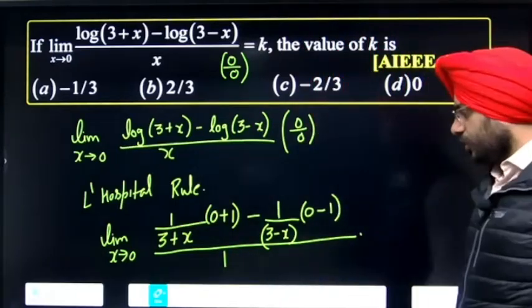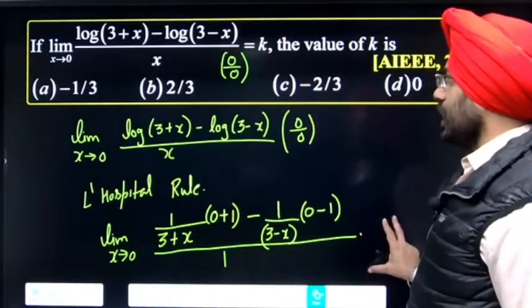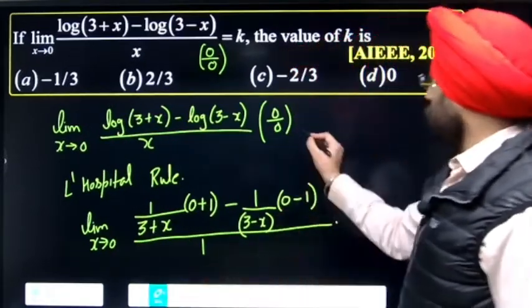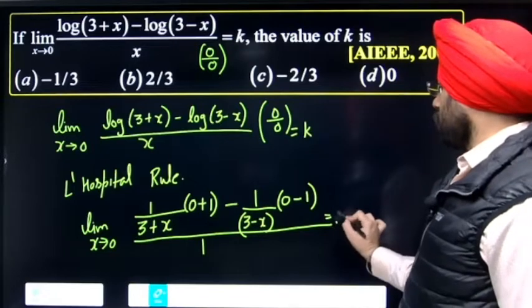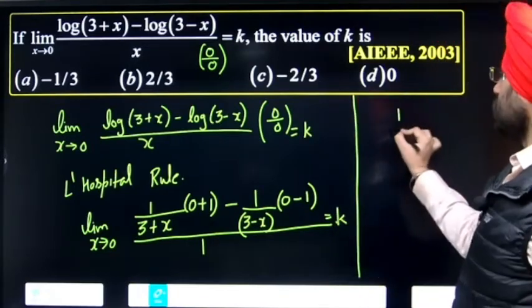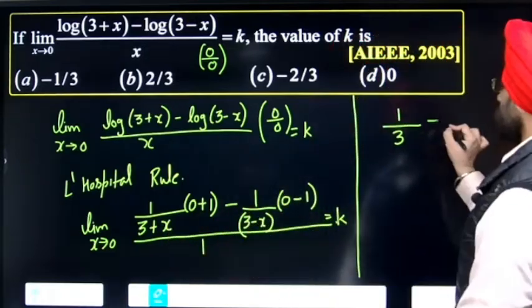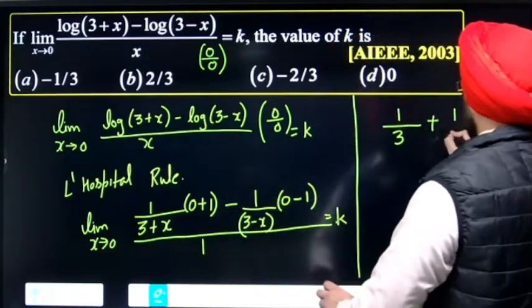Now put the value of x equal to 0. The value of x equals 0 is equal to k as given. Putting x equals 0: 1 upon 3, and minus minus becomes plus, so plus 1 upon 3, whole divided by 1 equals k.